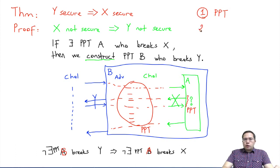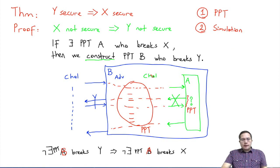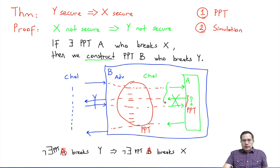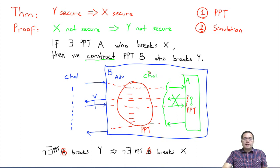Rule number two is about simulation. B is simulating the challenger for adversary A, so all this interaction — as far as A is concerned — should be essentially indistinguishable from what a real challenger would have done in the game defined for scheme X. B's behavior in its interaction with A should look exactly like the behavior of the real challenger.